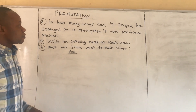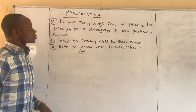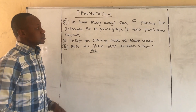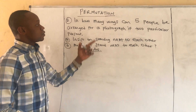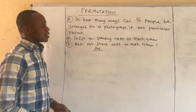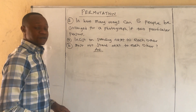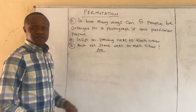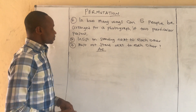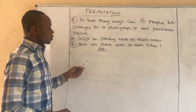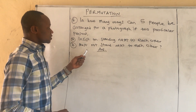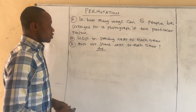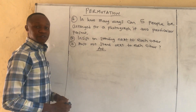The second question on permutation involves distinguishable items — this time, people. In how many ways can five people be arranged for a photograph if two particular persons insist on standing next to each other? That's the first part. Second: if two particular persons must not stand next to each other.